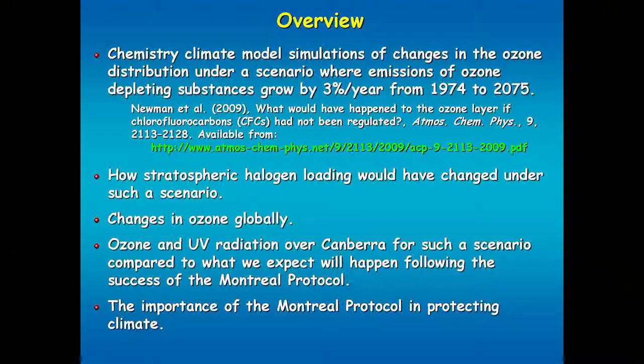I'm going to start off with some chemistry climate model simulations. I'll tell you what a chemistry climate model is — you'll need to know because Julie's going to talk about the same sort of thing. I'm going to show you what the world would have looked like if ozone depleting substance emissions had grown by about 3% per year from 1974 onwards.